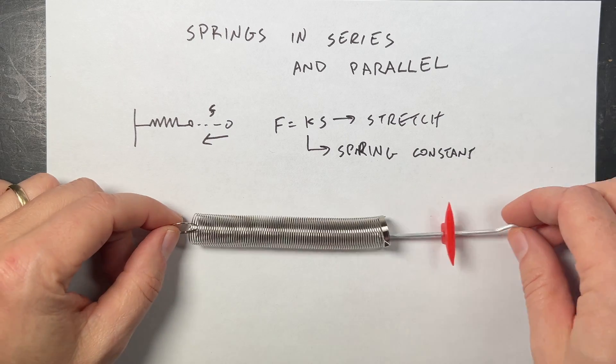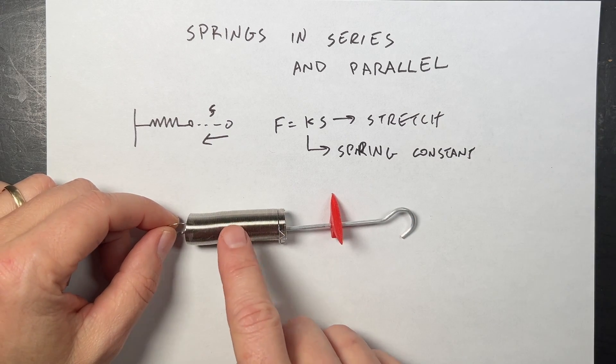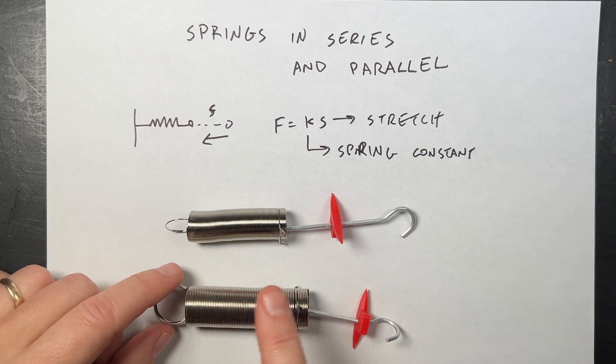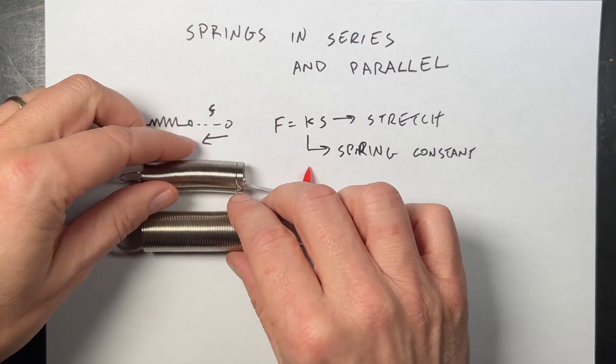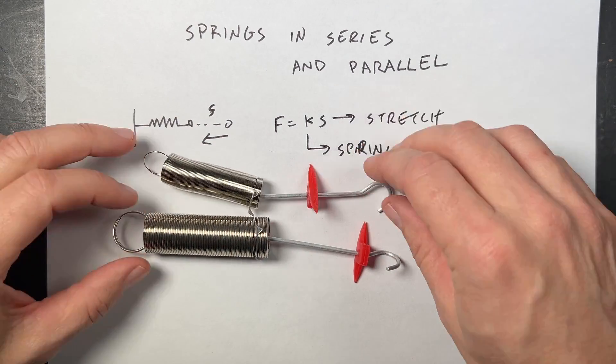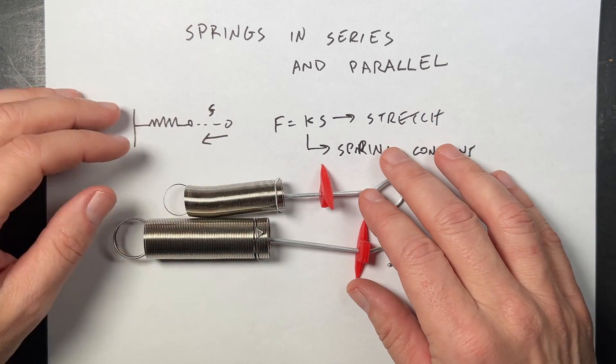Here I have a spring, and it's fairly weak, has a very low spring constant. Here I have another spring, and it's stiffer, and it has a higher spring constant. So if I want to connect these two together, I could do like this, and I'll pretend like they have the same length.